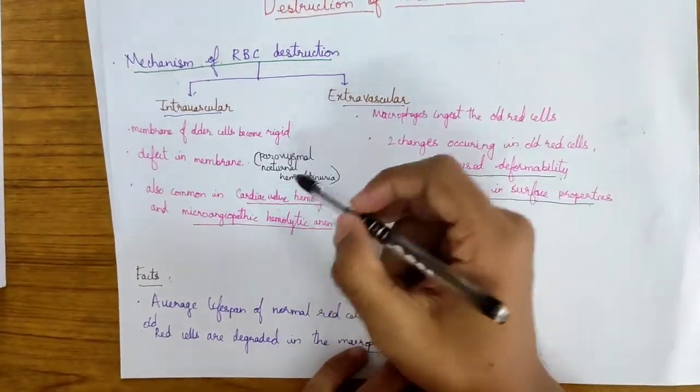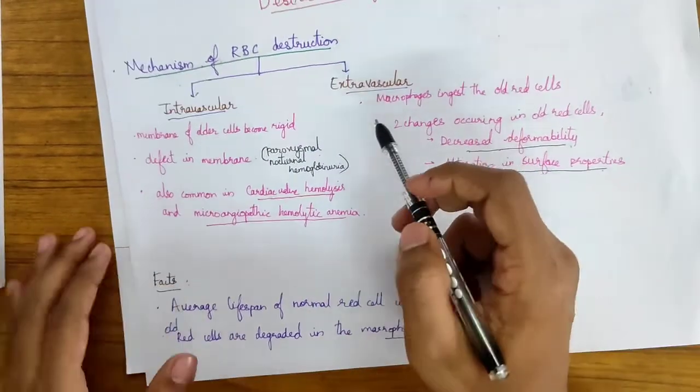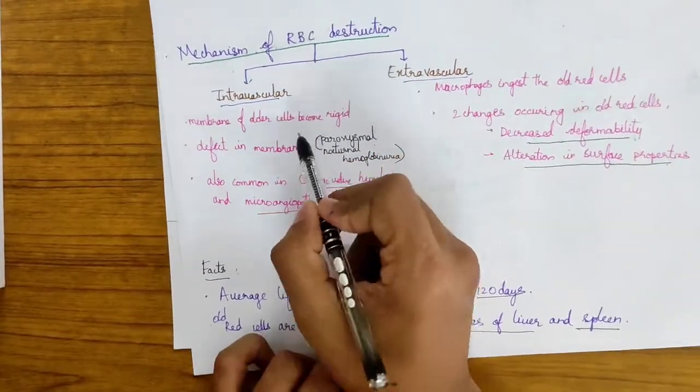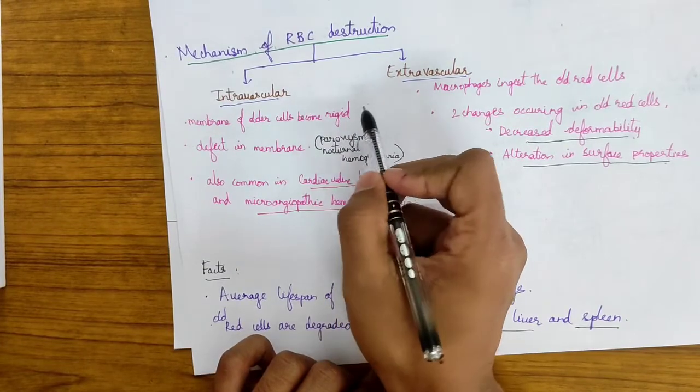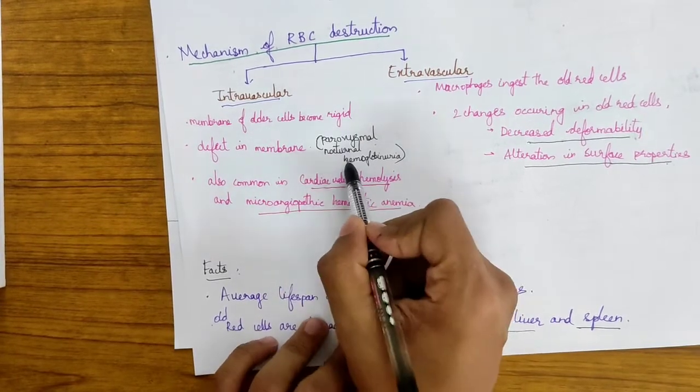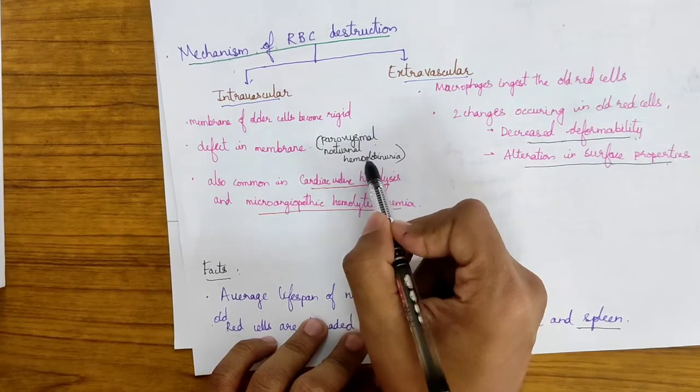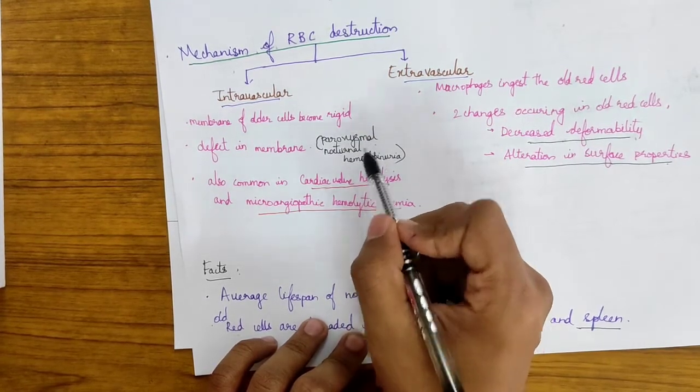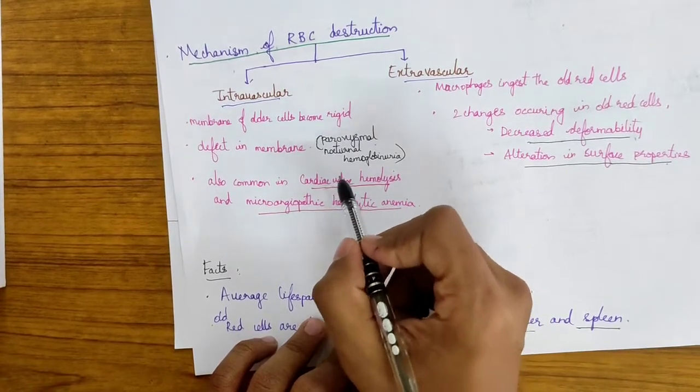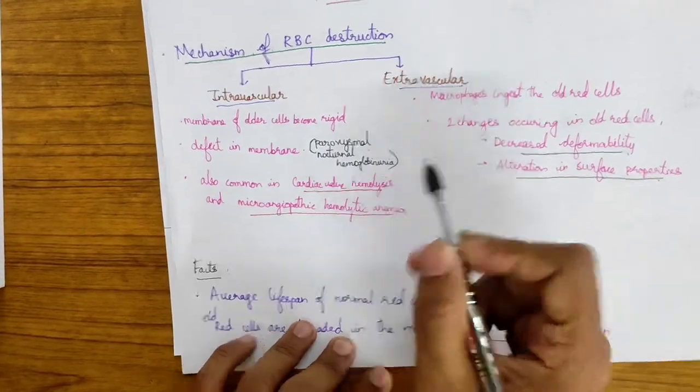Mechanism of RBC destruction. RBC destructs intravascular or extravascular. The causes of intravascular destruction of RBC are: membrane of older cells become rigid, due to which the lysis of RBCs become easier. Defect in membrane, for example in the case of paroxysmal nocturnal hemoglobinuria, in which holes appear in the cell membrane of the RBCs, which causes easy degradation of the RBCs inside the vascular system. It is also common in cardiac valve hemolysis and microangiopathic hemolytic anemia.